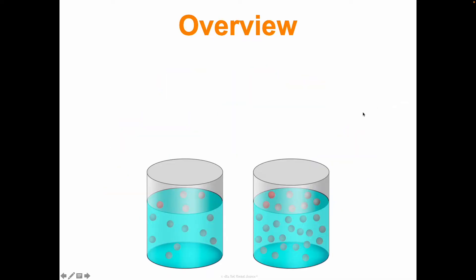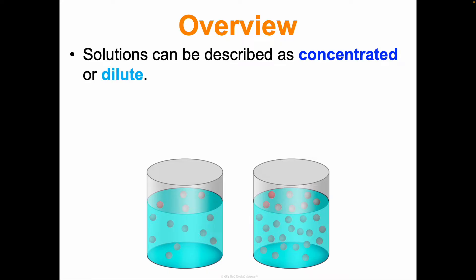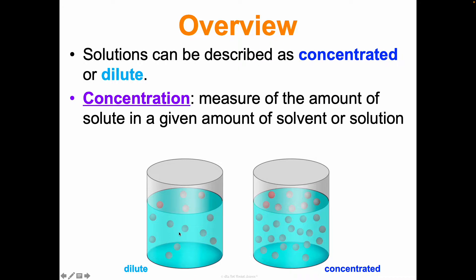A little overview: solutions can be described as concentrated or dilute. We've already talked about different types of solutions - saturated or unsaturated, or whether they have an ionic versus covalent substance that dissolves. But you can also describe them as concentrated or dilute. Looking at this picture and looking at the ratio of solute to solvent, we would say this one is more concentrated and this one is dilute.